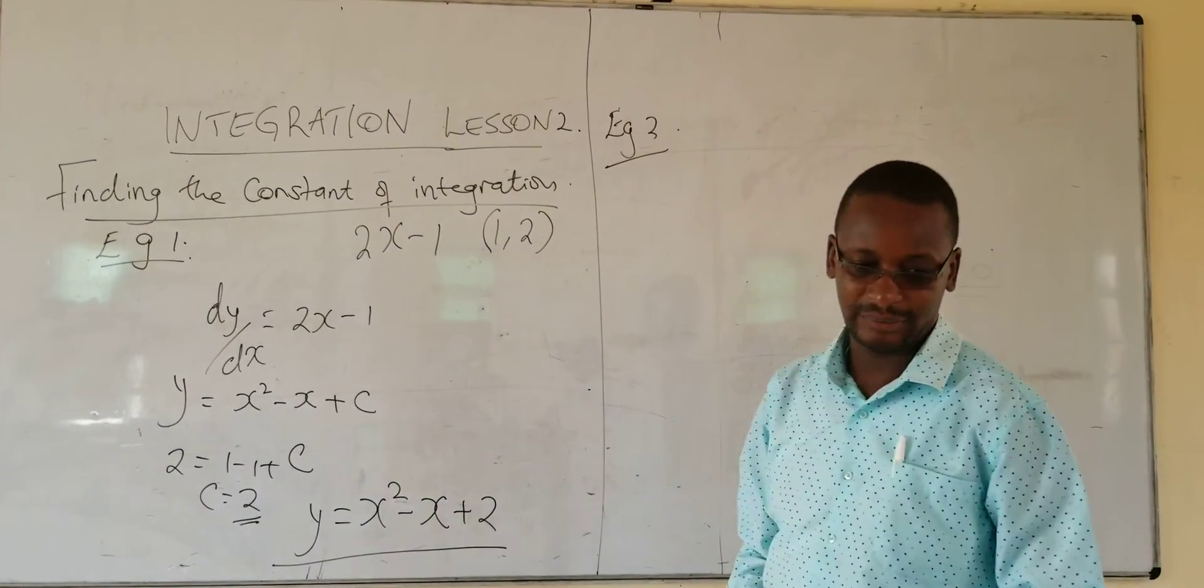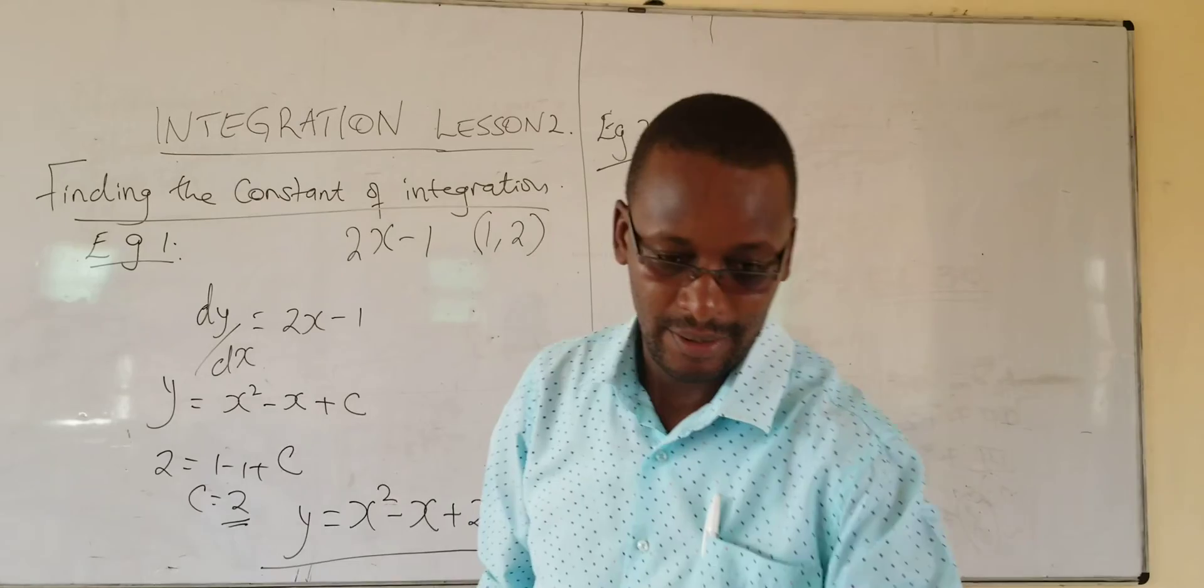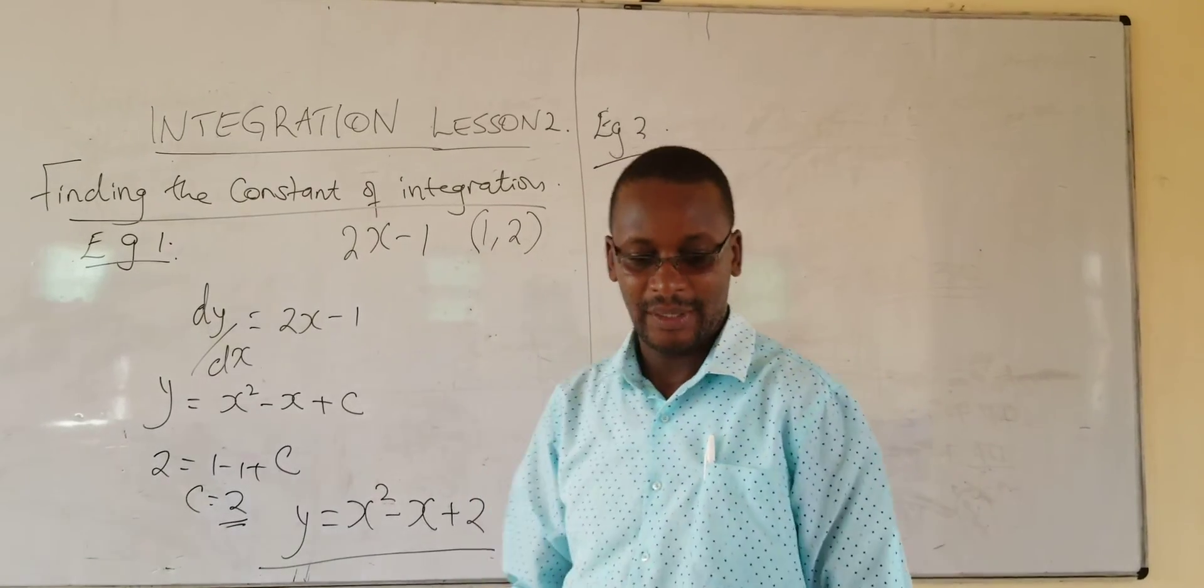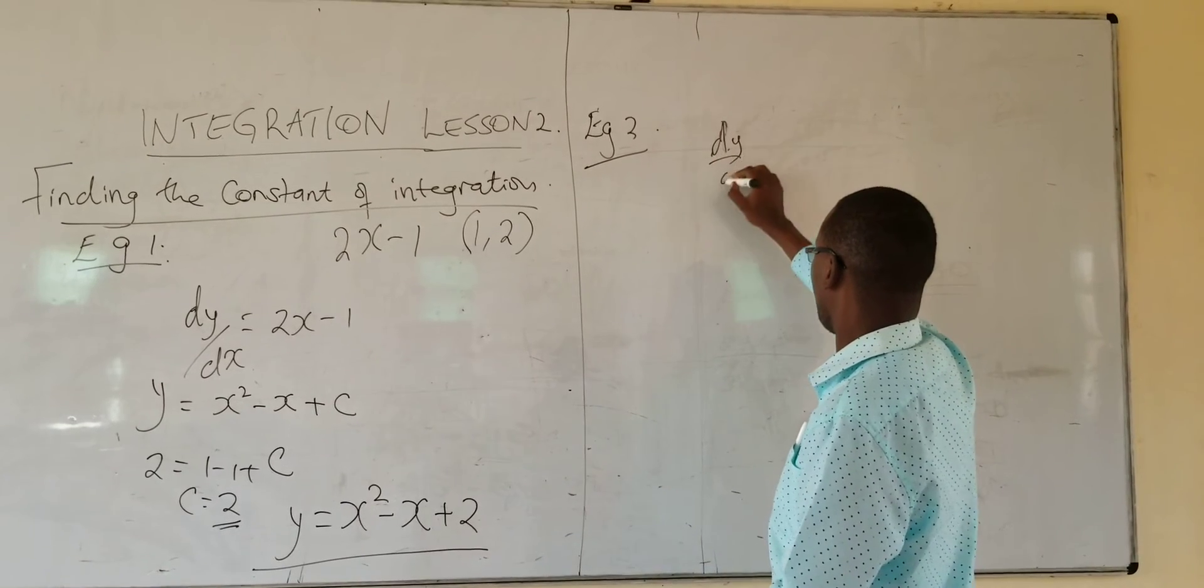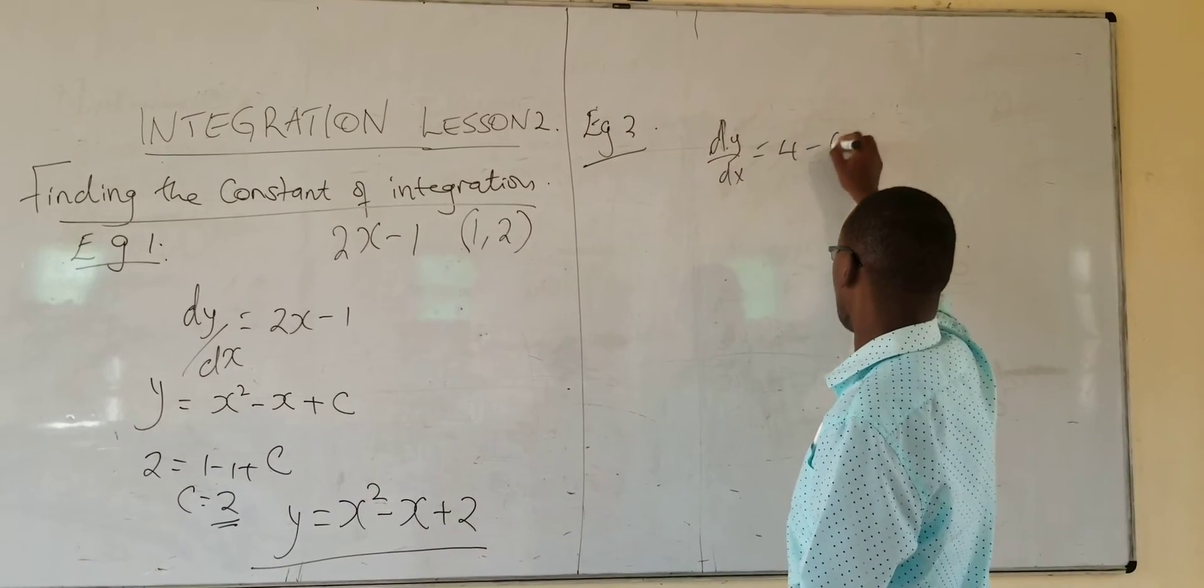A second example. If dy over dx is equal to 4 minus 6x.